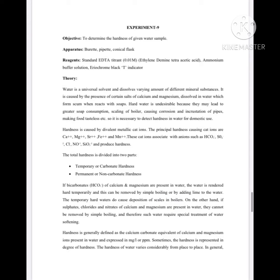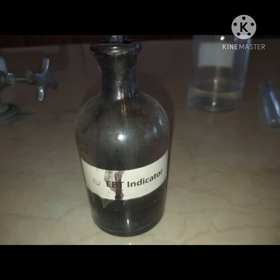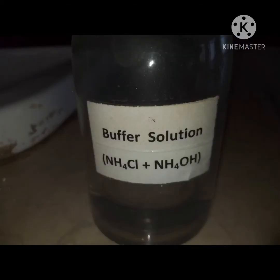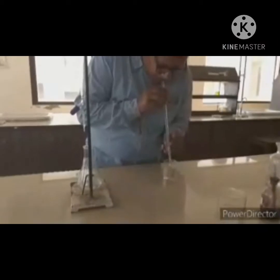There is one more reagent used in this experiment which is ammonium buffer solution. The hardness experiment works at a particular pH which is 10, so we add ammonium buffer solution to the water sample to raise its pH to 10. The function of ammonium buffer solution is to raise the pH of the water sample so that the reaction takes place. You can see the Eriochrome Black T indicator and the ammonium buffer solution here.